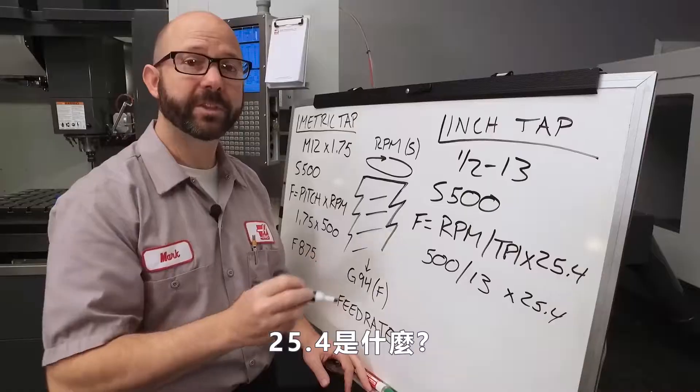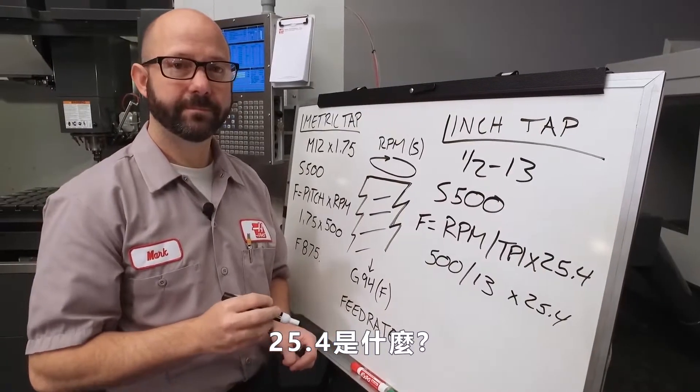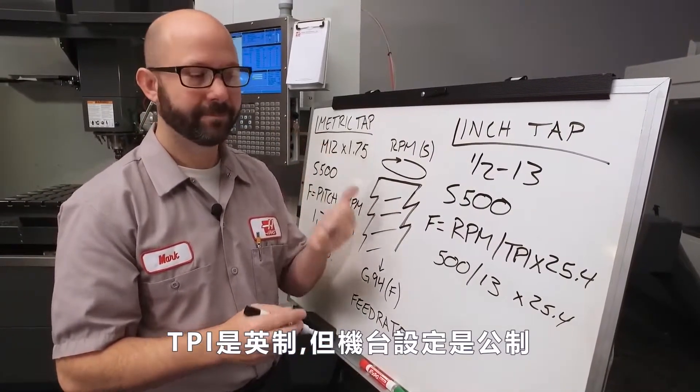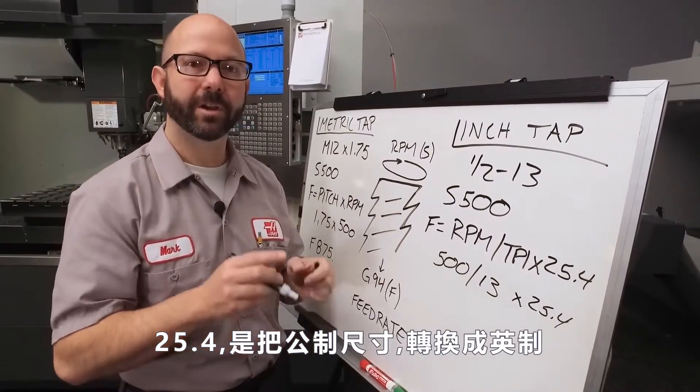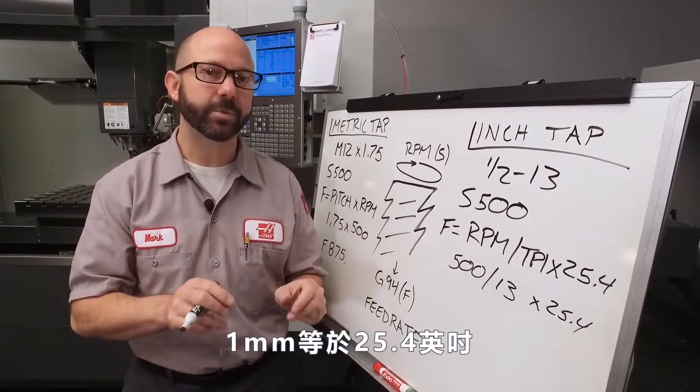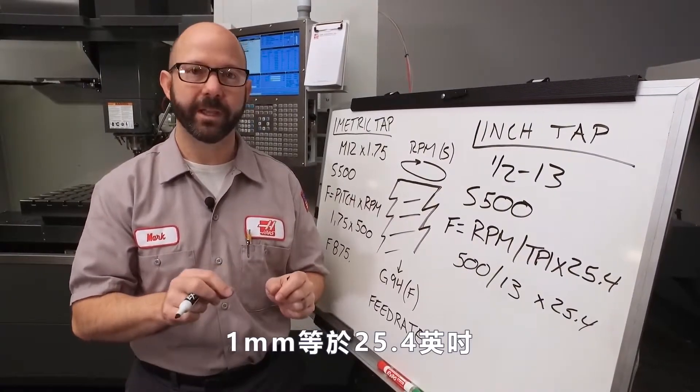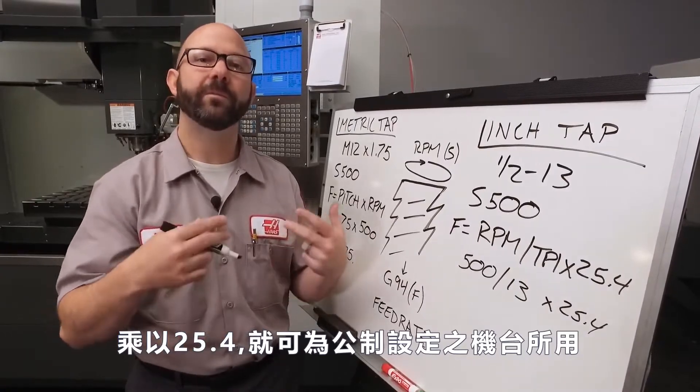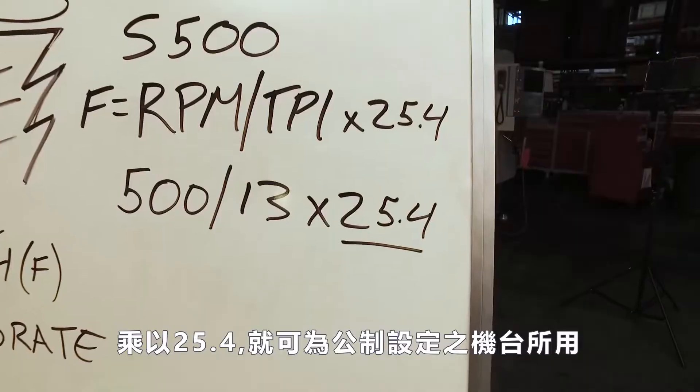Now, where did the 25.4 come from? Our TPI is in inches, but my machine is in millimeters. The 25.4 converts those inches into millimeters. There are exactly 25.4 millimeters per inch, so by multiplying by 25.4, we've converted our formula into something the machine can use.